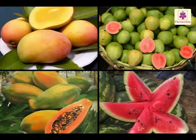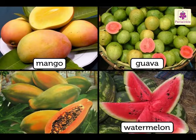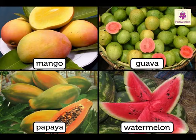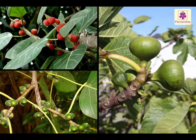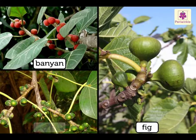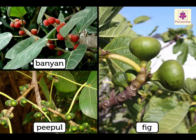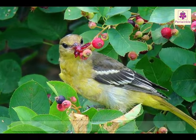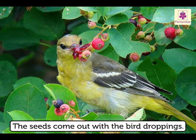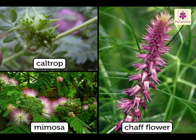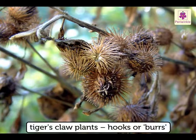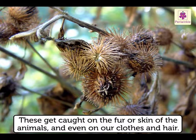Animals: Fleshy and juicy fruits like mango, guava, watermelon, and papaya are eaten by us and some other animals. The seeds are just thrown away. Birds eat the fruits of banyan, fig, and similar plants. They swallow the seeds along with the fruits, and these seeds come out with the bird droppings. The fruits of caltrop, shafla, and mimosa have thorns and spines. The tiger's claw plant has hooks or burrs. These get caught on the fur or skin of animals and even on our clothes and hair.